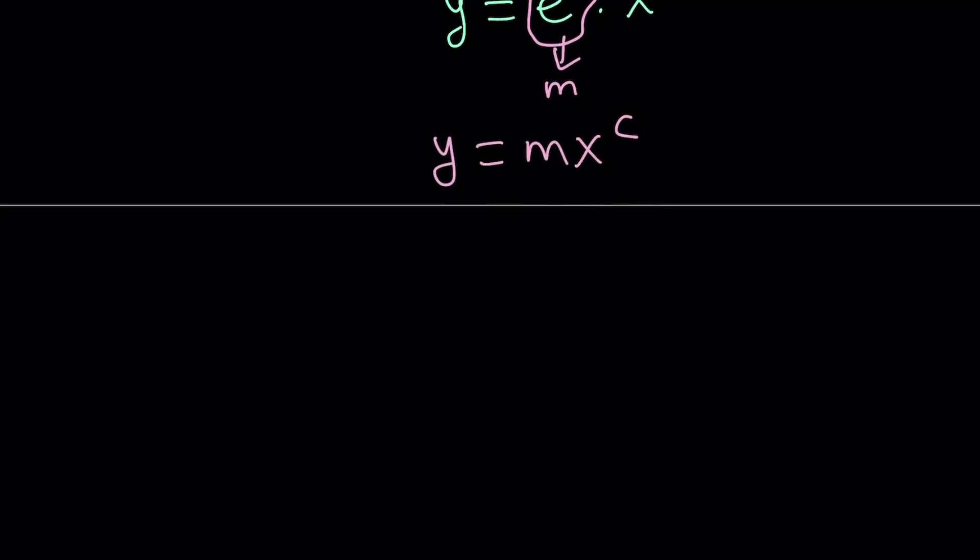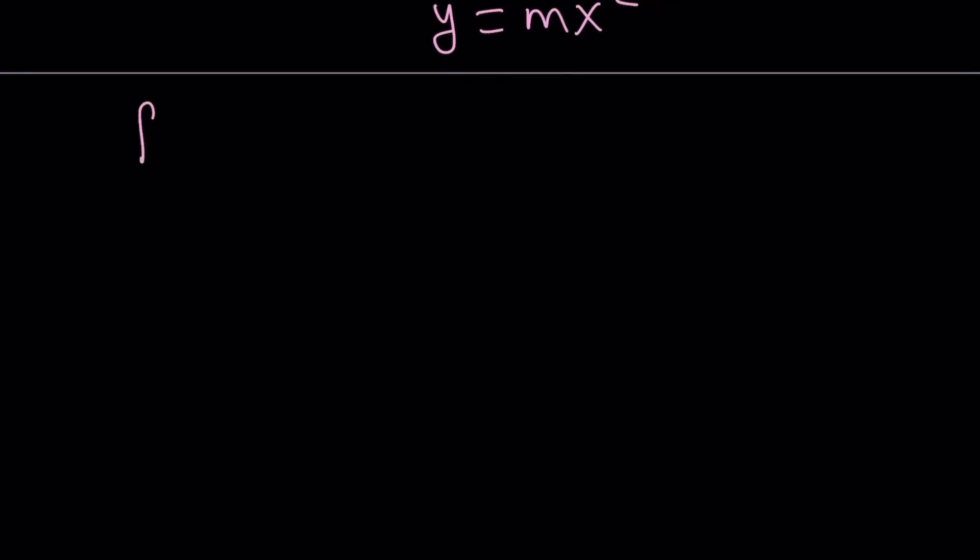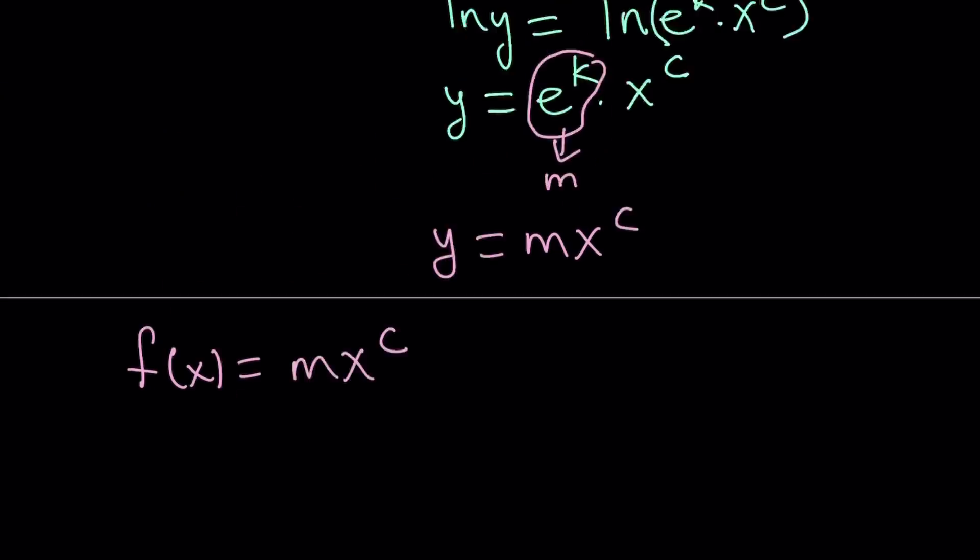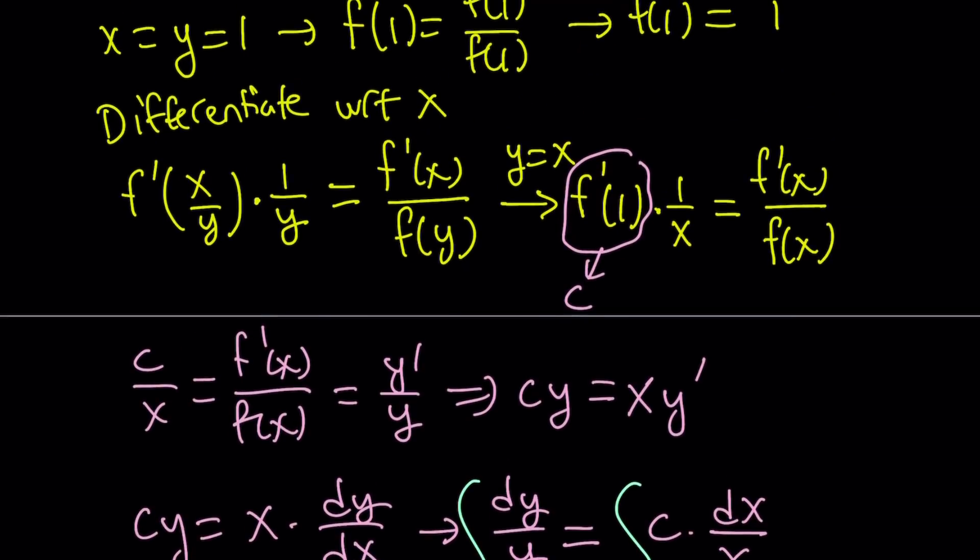Notice that k is a constant and e to the power k is also a constant. Let's replace e to the power k with m. So from here, we get y equals m times x to the power c.